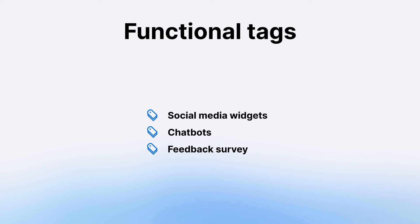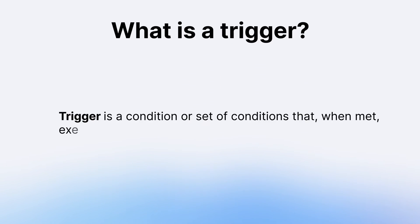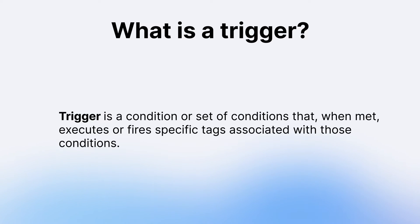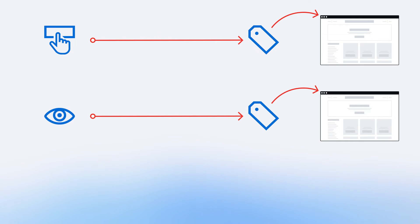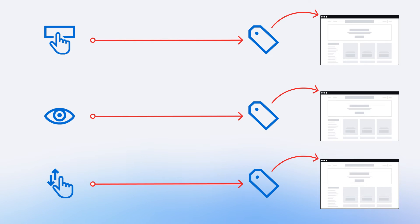The next building block is a trigger. What is a trigger? A trigger is a condition or a set of conditions that, when met, executes or fires specific tags associated with those conditions. When we execute tags on a website, we commonly refer to this as tag firing. It is important to know that no tag will be fired if it does not have a trigger attached to it. There are different types of triggers, which I'll describe in another video — link in the description below. To give you the idea, we have triggers that fire upon click, or upon page load, or page scroll, giving us a lot of possibilities in the context of data tracking.